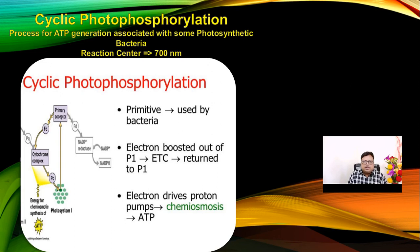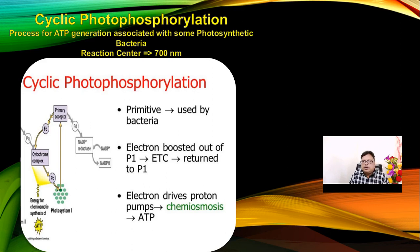This is cyclic photophosphorylation, a process of ATP generation associated with some photosynthetic bacteria. The reaction center is at 700 nm wavelength — photosystem 1. Once light is incident on the antenna system, electrons are expelled — 4 electrons in total — to the primary ferredoxin receptor, then to ferredoxin, and NADP is converted into NADPH2. In cyclic photophosphorylation (photosystem 1), the excited electron, after going to the primary ferredoxin, goes to the cytochrome b6f complex and is regained by photosystem 1 — that is the cyclic pathway.